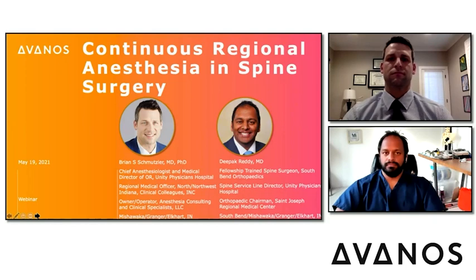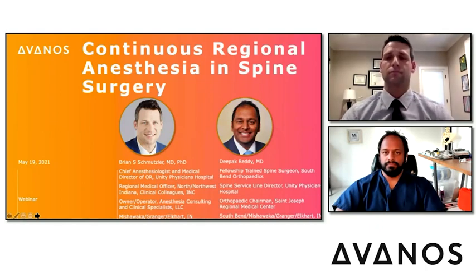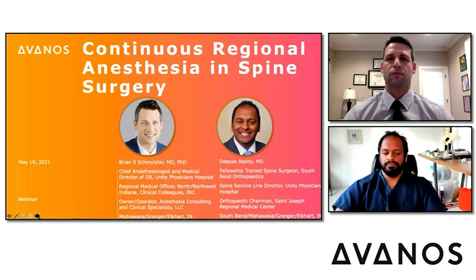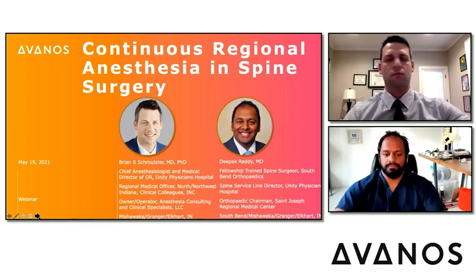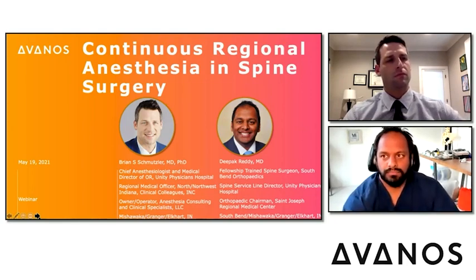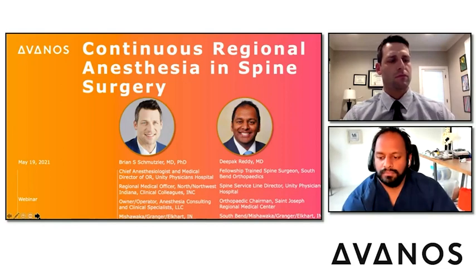At any time, you may adjust your audio using any computer volume settings. On the right-hand side of your screen, you will see the Q&A polling window. There is a large window which holds all of your sent messages and a smaller text box at the top where you will type in your questions. To send a question, click in the text box and type your text. When finished, click the ask button. All questions are only seen by today's presenters and will be addressed at the end of the presentation.